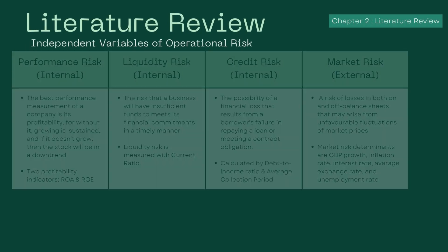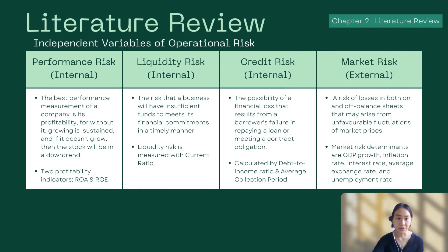For the independent variables of operational risk, there are four. The first is performance risk, an internal variable measured by profitability, with two indicators: return on assets (ROA) and return on equity (ROE). The second internal variable is liquidity risk, which is the risk that a business may have insufficient funds to meet financial obligations, measured by current ratio.